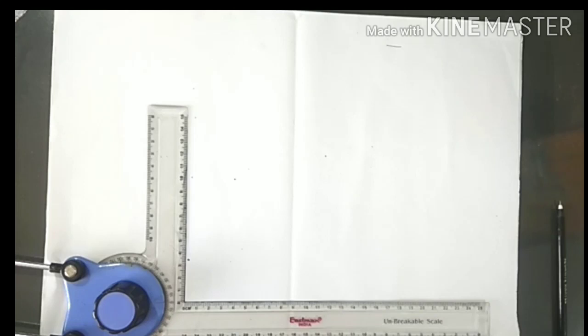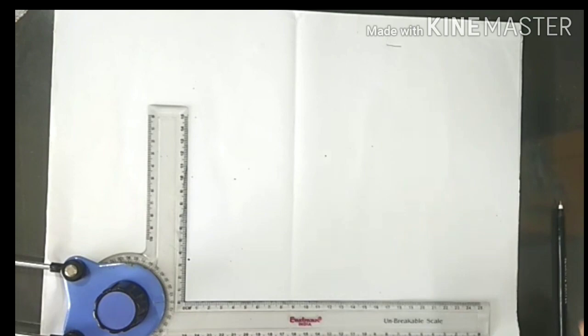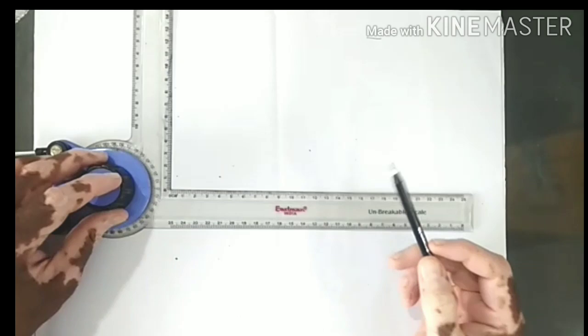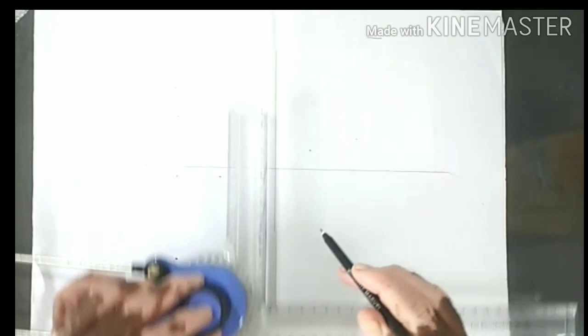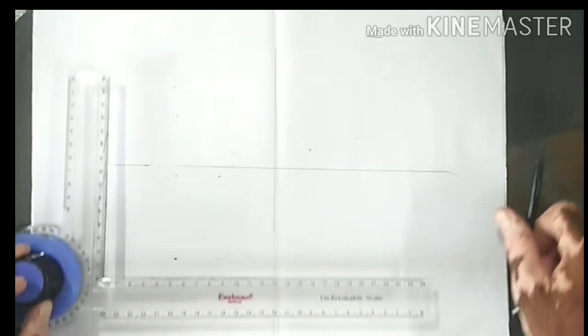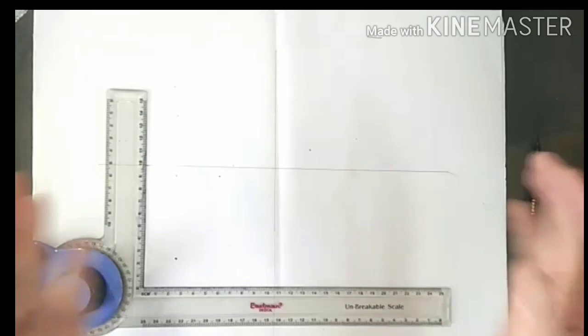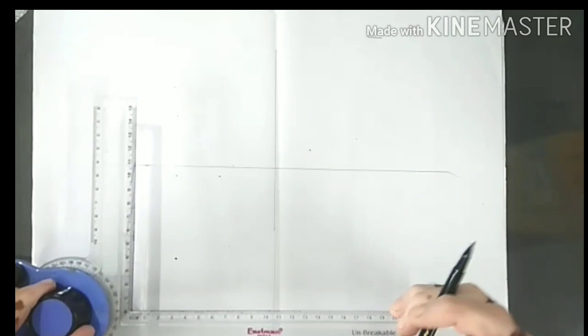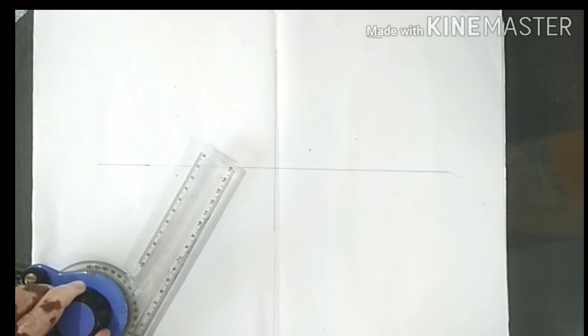So vertical square prism, base 50 mm side and axis 110 mm long. This is our XY line. One face of the vertical square prism is inclined at 30 degrees to VP. The size of the vertical prism is 50, so this is 50 by 50.